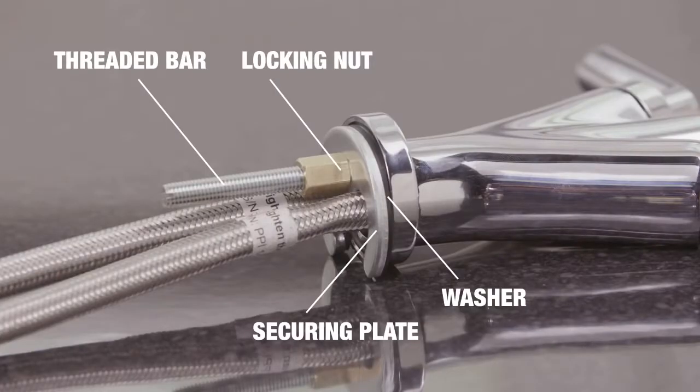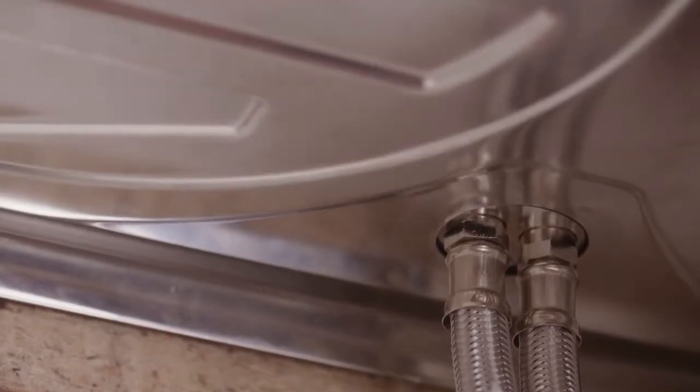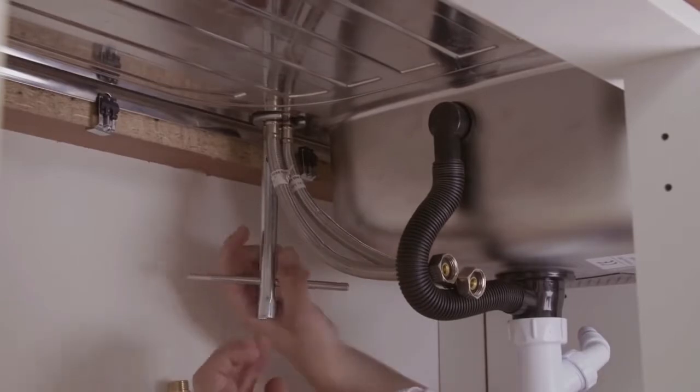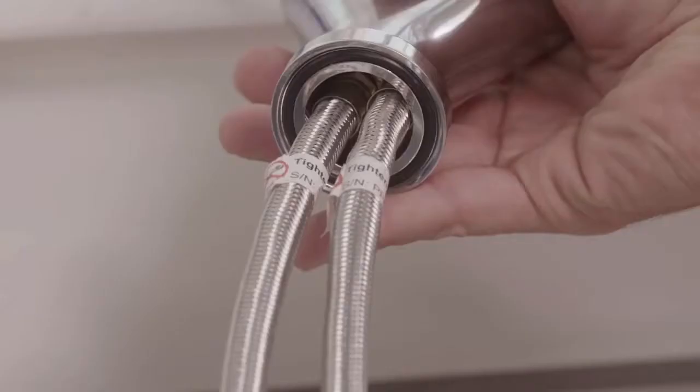Under each tap there is a long thread fitting with a nut that will go through your sink. This nut, washer and securing plate will hold the tap from underneath onto the sink. There is also a plastic seal which will create a watertight bond between the sink and the tap.